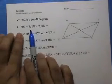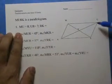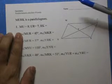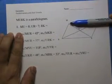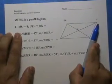Question 1: MU equals 8, UR is 7, what is RK? MU is this piece, UR is this piece, RK is this piece.